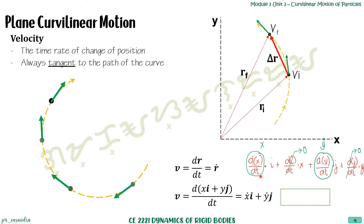Since dx/dt is the velocity in the x direction and dy/dt is the velocity in the y direction, we can also write our velocity as vxi + vyj. Note that i and j are only our unit vectors. This is the equation for instantaneous velocity.